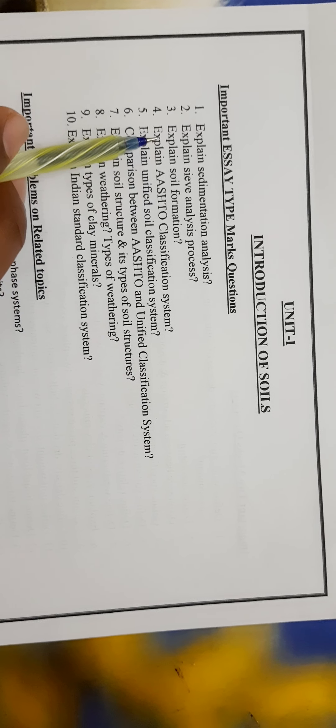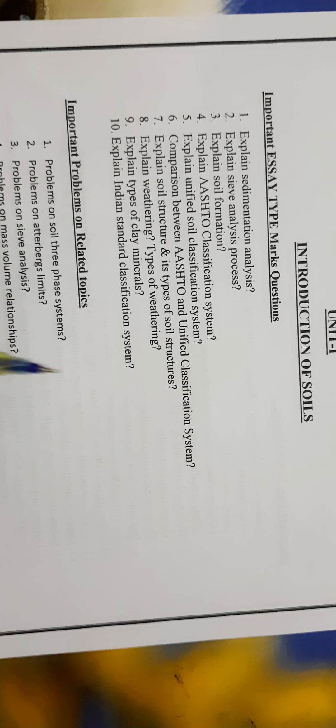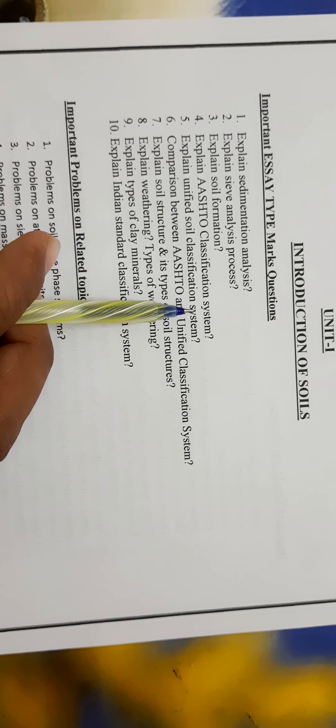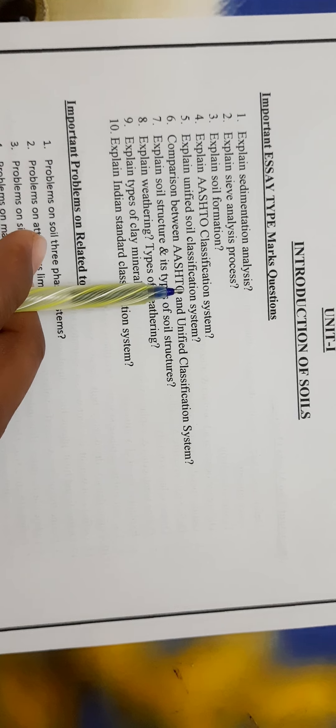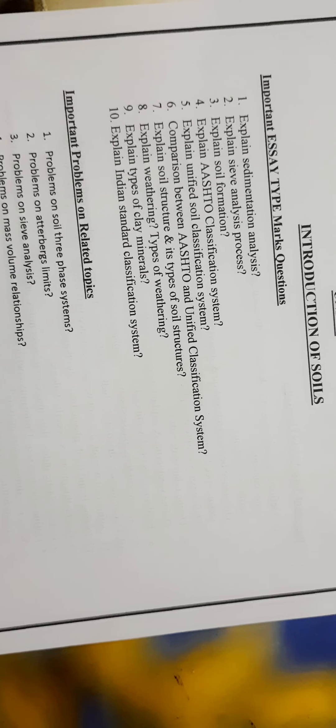Explain the AASHTO classification system (American Association of State Highway and Transportation Officials) and the Unified Soil Classification System (USCS). These are soil classification systems and are very important. Explain soil structure as well.